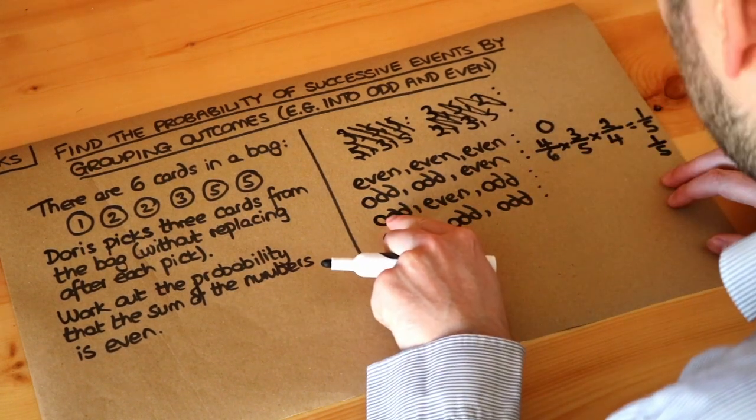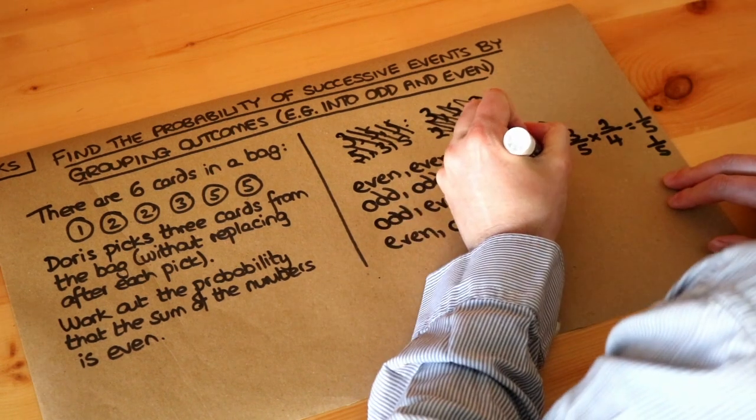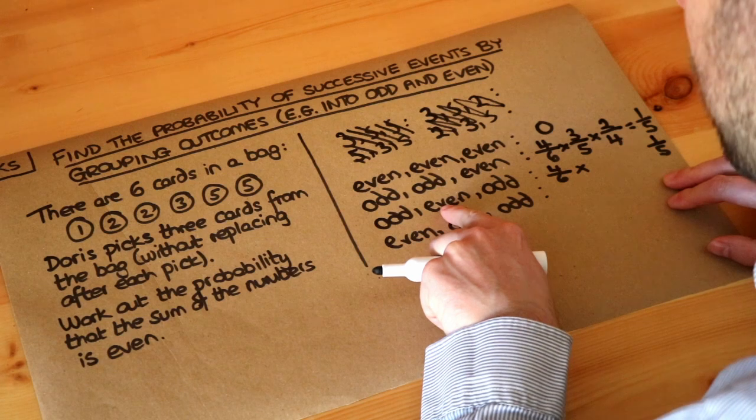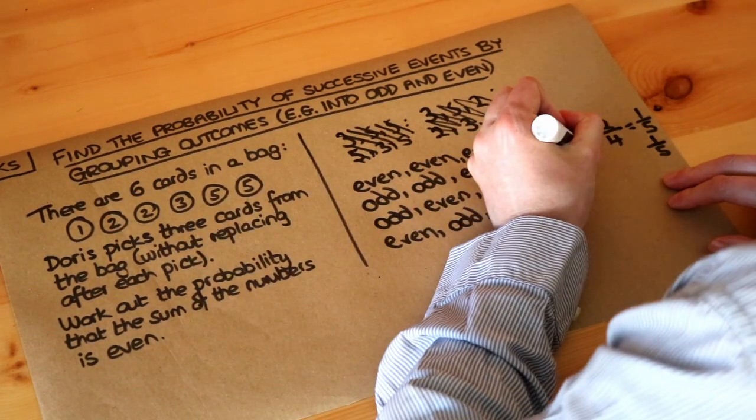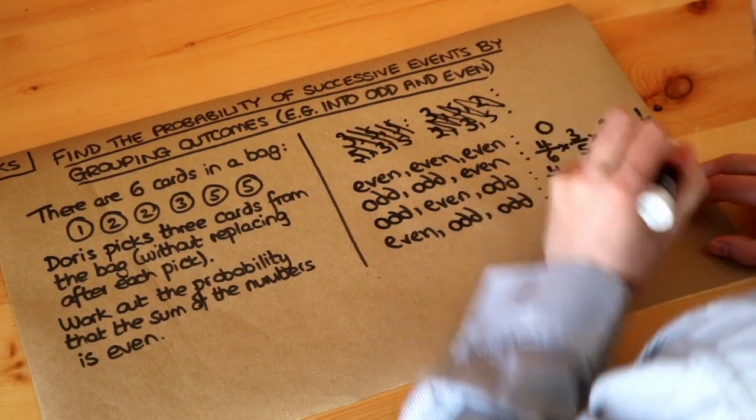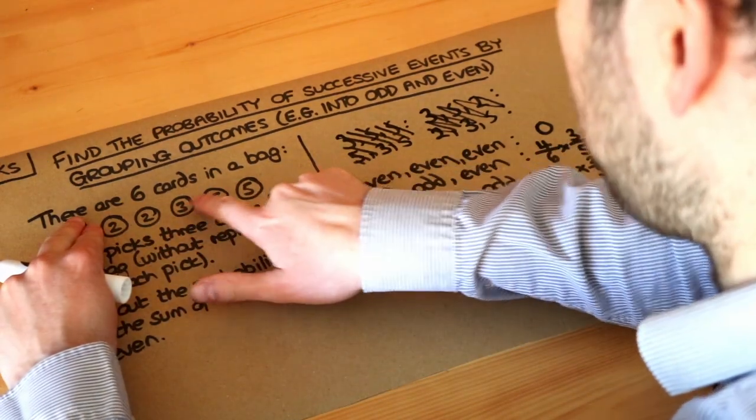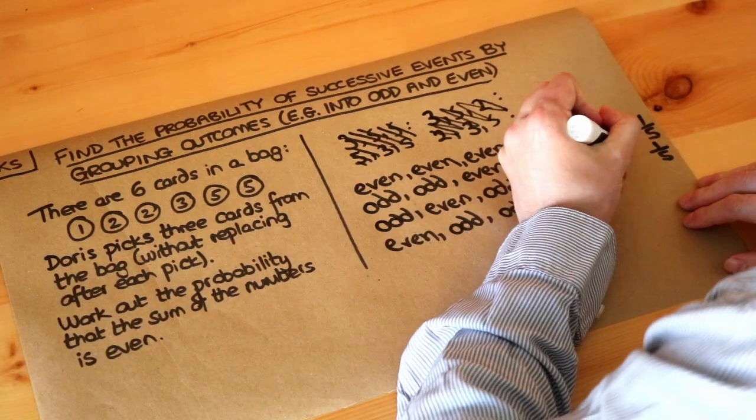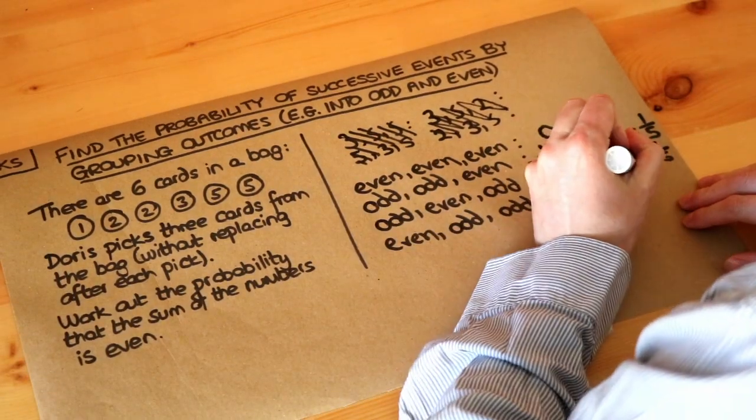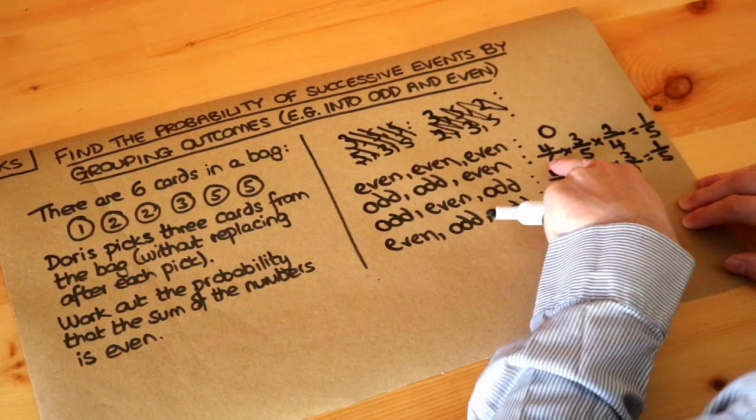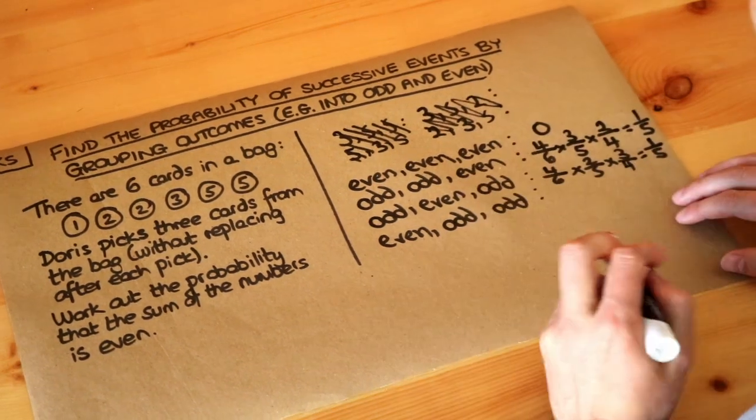Let's just double check that. The probability that the first one is odd is going to be four out of six again. The probability that the second card is even, well, there's two even ones still there, but it's out of five. And then the probability of the last one is odd, well, we picked one odd, so let's say it was that one. We've still got three odd left, so it's three left out of four cards left. And we can see what the same numerators, a bit in a different order, the same denominators, so we're going to get the same fraction there.